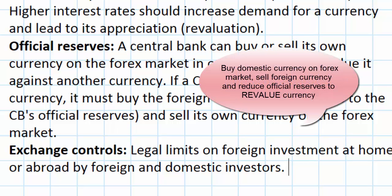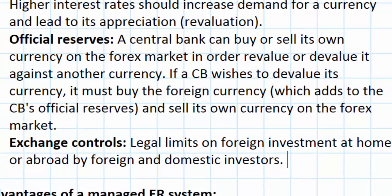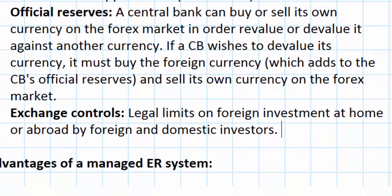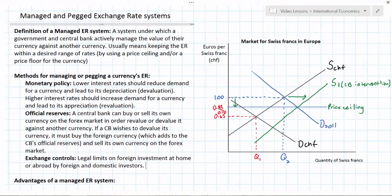If the central bank wishes to revalue or strengthen its currency against another, it could increase the supply of foreign currencies and buy its own currency on the forex market, driving up demand and keeping the exchange rate above a minimum level. Finally, governments can implement exchange controls, which limits the amount of foreign investment at home or investment abroad by domestic firms, helping keep demand for the country's currency within a certain range and maintaining the exchange rate within a desired range.